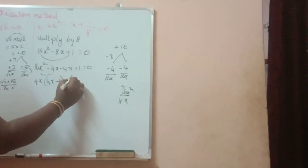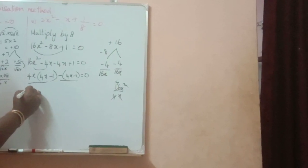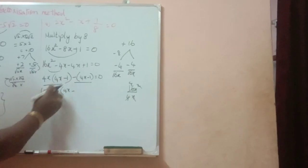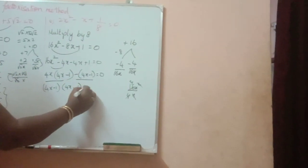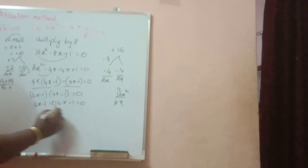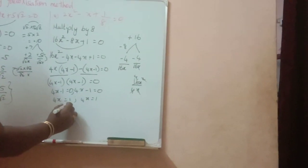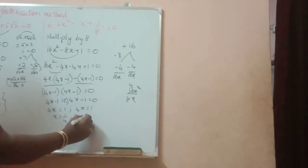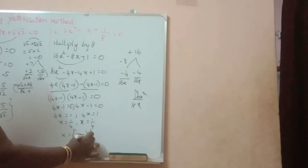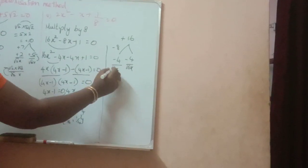Take minus as a common term. So, 4x minus 1 is equal to 0. Among these two terms, 4x minus 1 is the common term. Remaining here, 4x is there. 4x minus 1 came there. So, remaining 1 is there — minus. So, 4x minus 1 equal to 0. 4x equal to 1. x equal to 1 by 4.